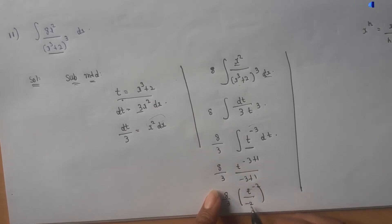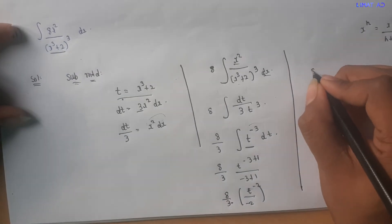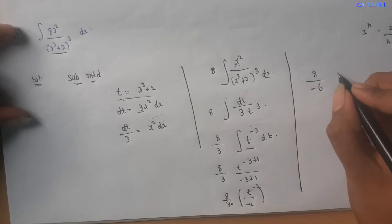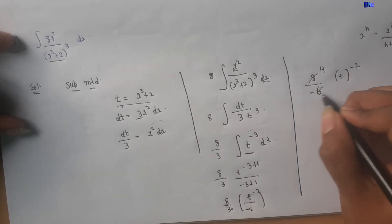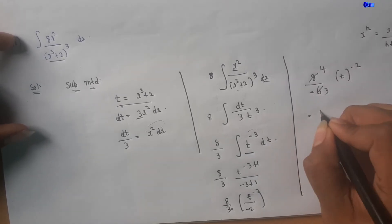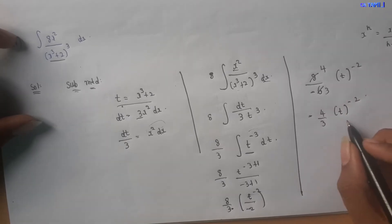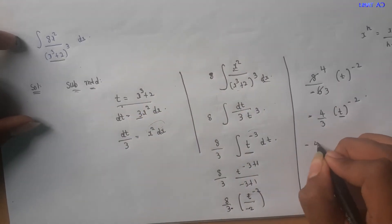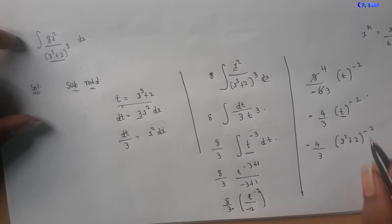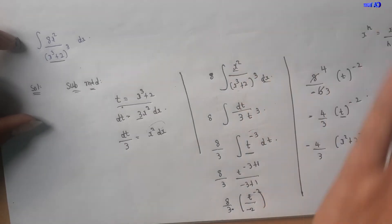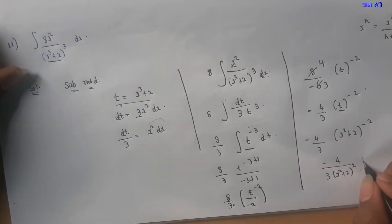So we have t power minus 2, and the denominator becomes minus 2. Dividing 8/3 by minus 2 gives minus 4 by 3. So the result is minus 4 by 3 times t power minus 2. Substituting back, t equals x³ plus 2, so we get minus 4 by 3 times (x³ + 2) to the power minus 2.